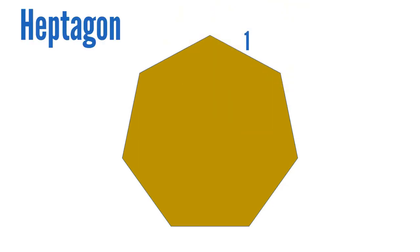Hello, Hexagon. How many sides do you have? One, two, three, four, five, six, seven. The Hexagon has seven sides.